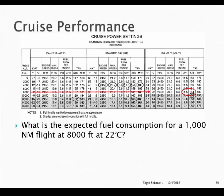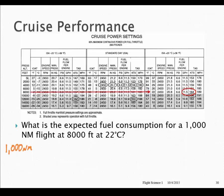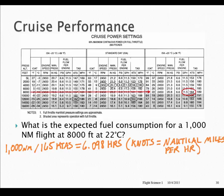For the first question: what is the expected fuel consumption for a 1,000 nautical mile flight at 8,000 feet at 22 degrees C? We go to the left side of the chart, find 8,000 feet, draw the arrow over to the right to the temperature of 22 degrees C, and then a little further to the right we see our corresponding fuel flow and true airspeed. So from 1,000 nautical miles divided by our true airspeed of 165 knots, that yields 6.098 hours — approximately 6.1 hours in flight.